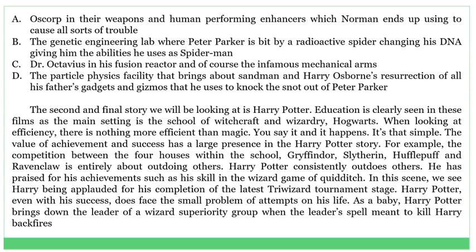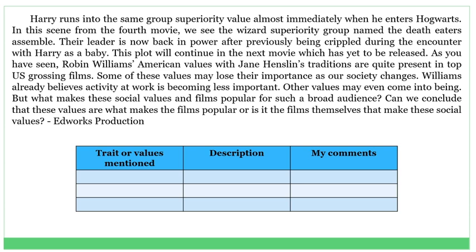He is praised for his achievements such as his skill in the wizard game of Quidditch. We see Harry being applauded for his completion of the latest Triwizard Tournament stage. Harry Potter, even with his success, faces the problem of prejudice in his life. As a baby, Harry Potter brought down the leader of a wizard superiority group. He runs into the same group's superiority value when he enters Hogwarts. In this scene from the fourth movie, we see the wizard superiority group named the Death Eaters assemble. Their leader is now back in power after previously being crippled during the encounter with Harry as a baby.